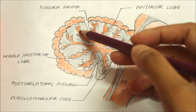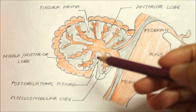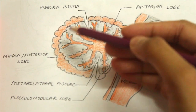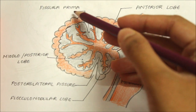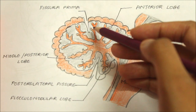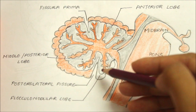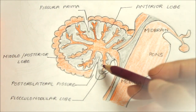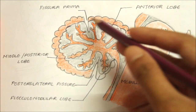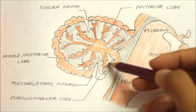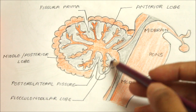The middle lobe is the largest of the three lobes. It is situated on both the superior and inferior surfaces. It is limited in front by the fissura prima on the superior surface and by the posterolateral fissure on the inferior surface. The flocculonodular lobe is the smallest lobe of the cerebellum; it lies on the inferior surface in front of the posterolateral fissure.